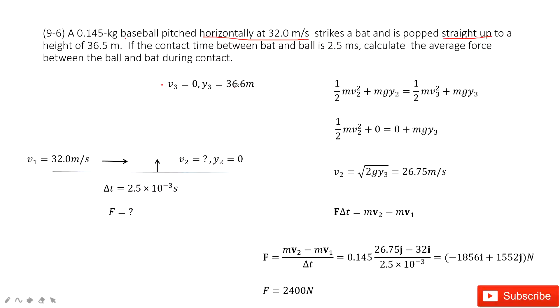The y3 is 36.5 meters. And we find the time taking for velocity v1 changes to v2 is given 2.5 × 10^-3 s.